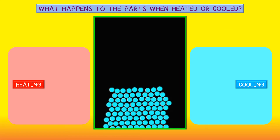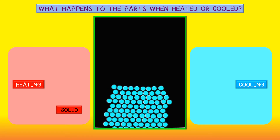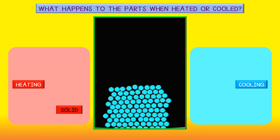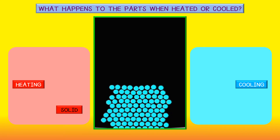In this video, you can see what atoms or molecules look like when they change from one state to another. We can say that the atoms and molecules are the parts that make matter. In a solid state, the parts are close together and move very slowly.